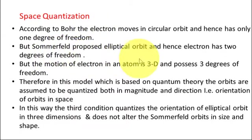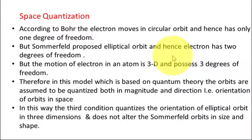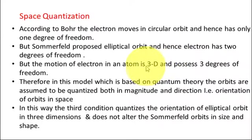Sommerfeld proposed an elliptical orbit, and when an electron moves in an elliptical orbit, it has two degrees of freedom because an ellipse has two axes — a major axis and a minor axis — which are not equal; one is larger and one is shorter. Applying Bohr and Sommerfeld's model together with elliptical orbits gives the electron two degrees of freedom. But as we can see in the figure, electrons are moving in different orbits around the nucleus.